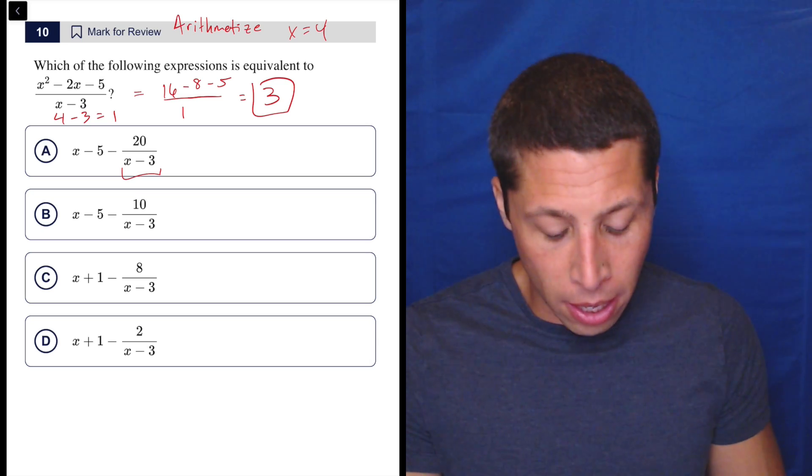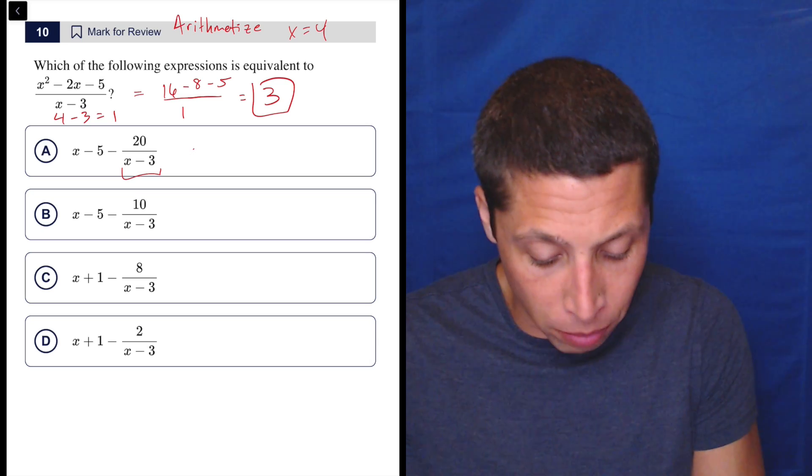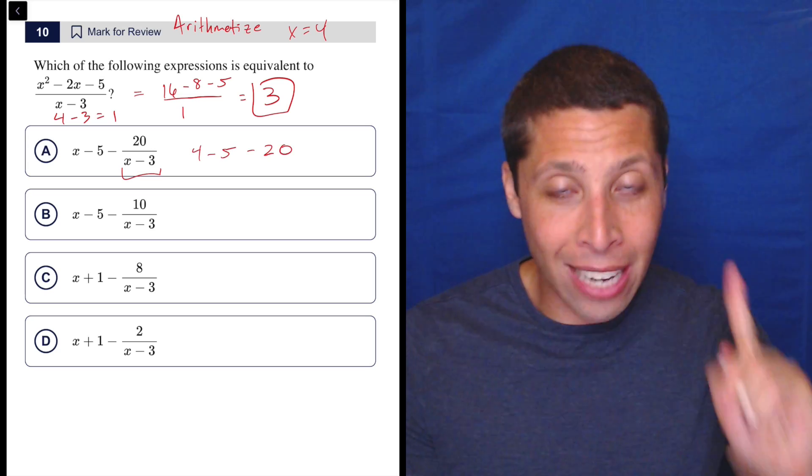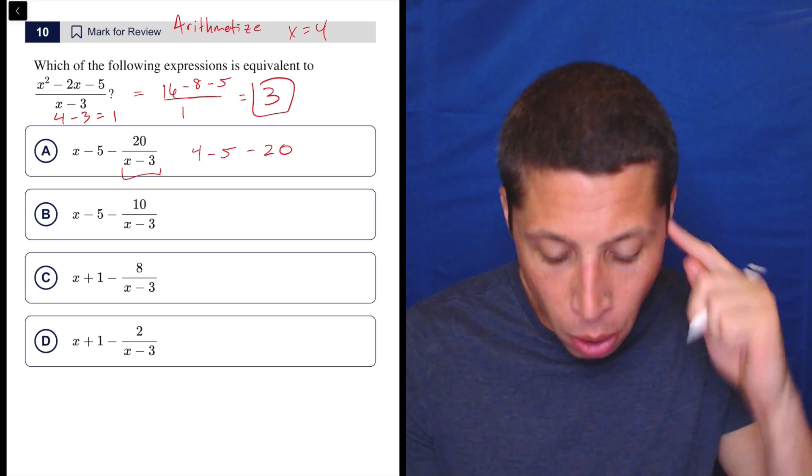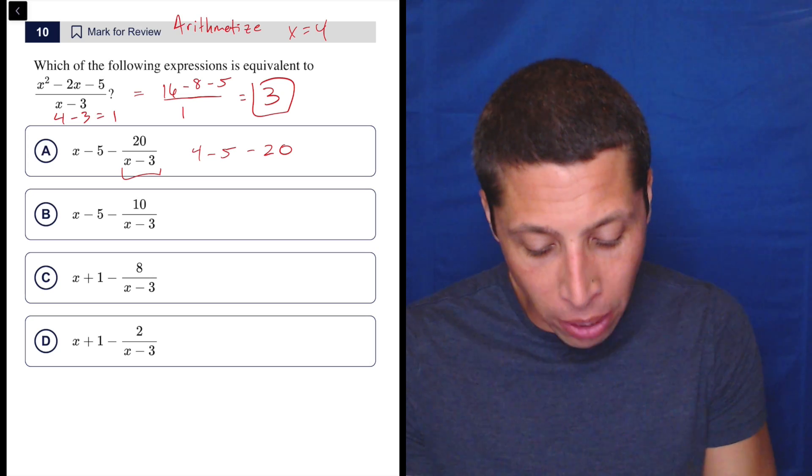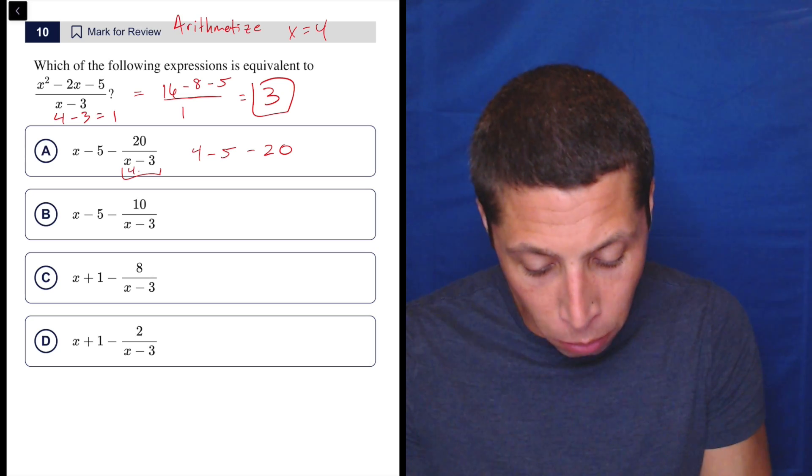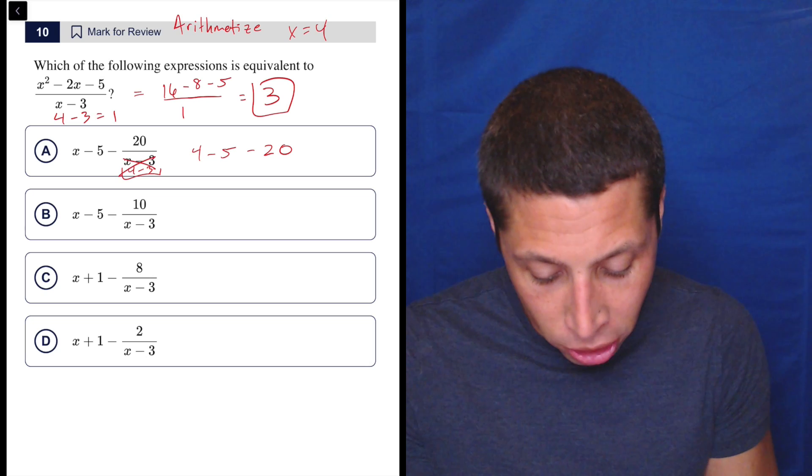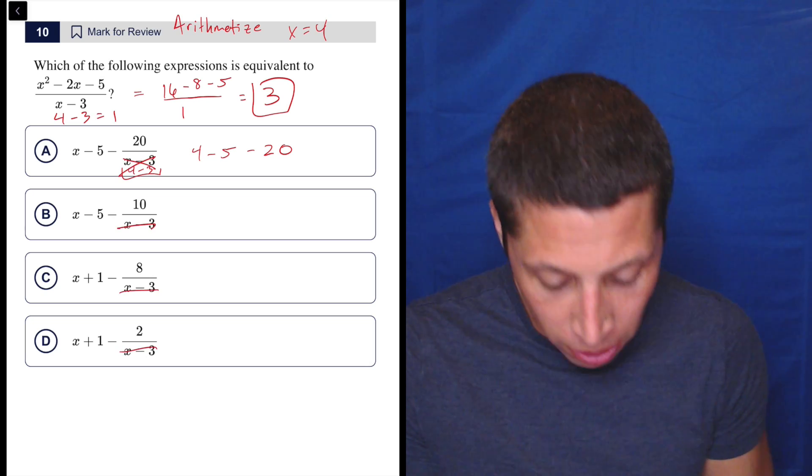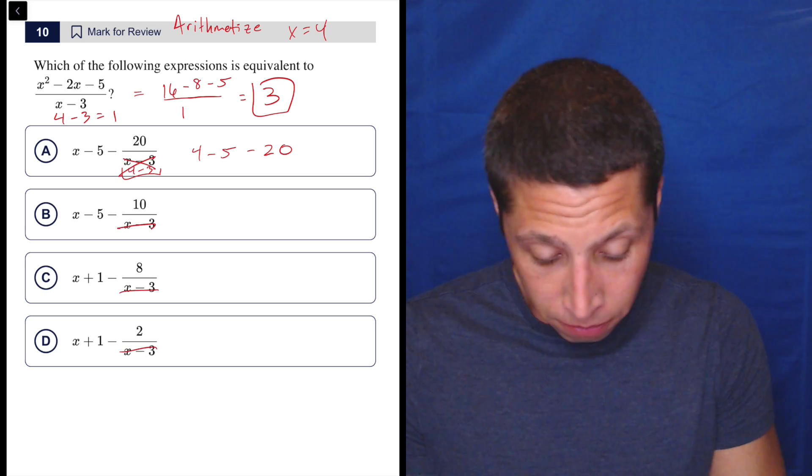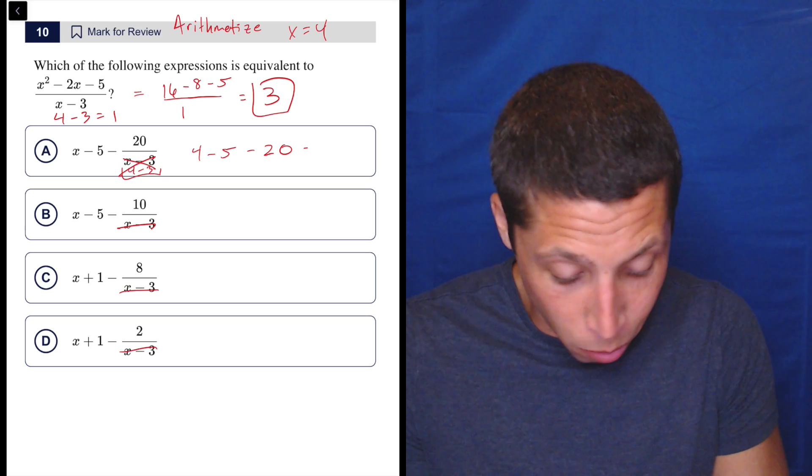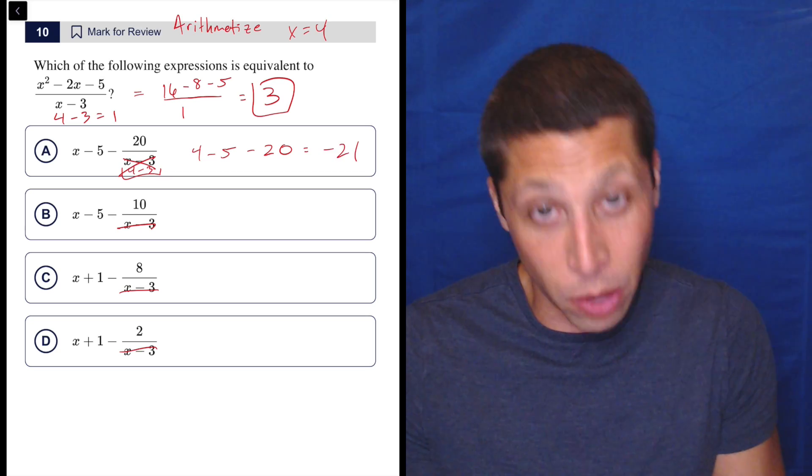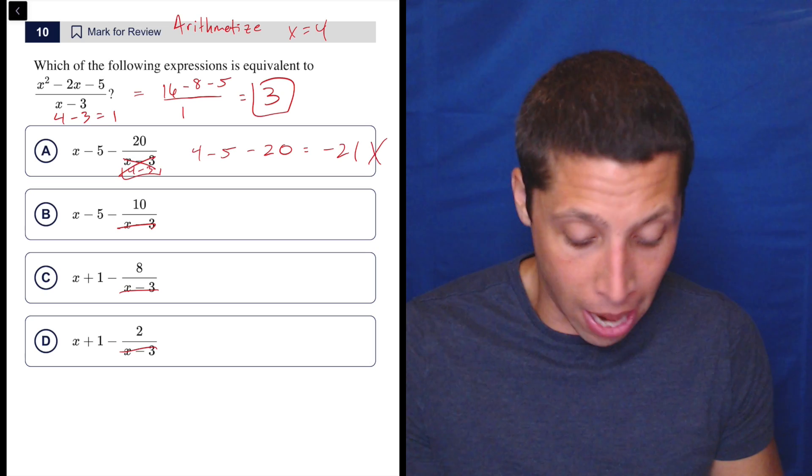Let's go to the choices. So again, I could use a calculator here, but we got four minus five minus 20. And again, I don't need to worry about that fraction because I know I've looked ahead and I can see that when I do four minus three in all of these, I'm going to get one, meaning the fraction is basically dead. So let's kill it. So what did I say? Four minus five minus 20. Well, four minus five is negative one. Negative one minus 20 is negative 21. So that doesn't work. So not A.